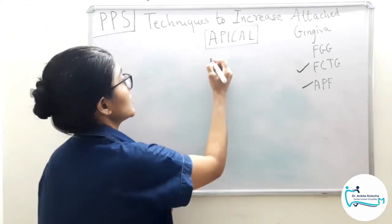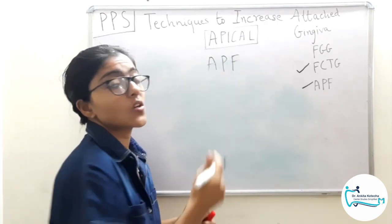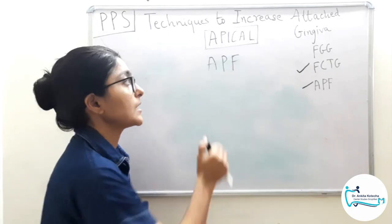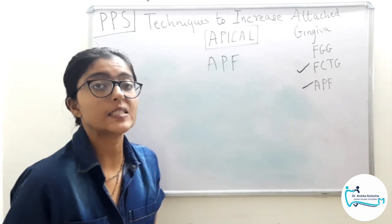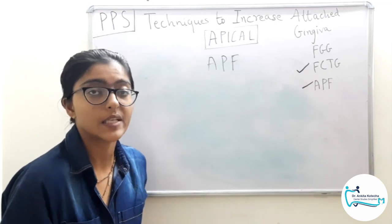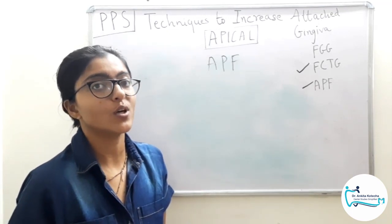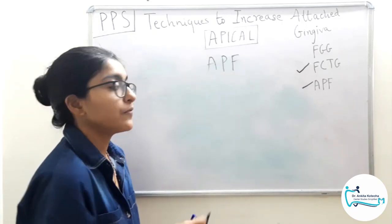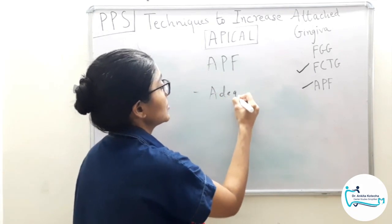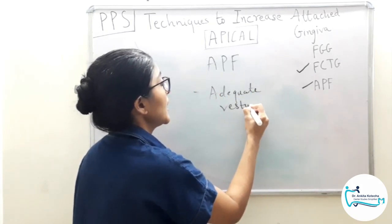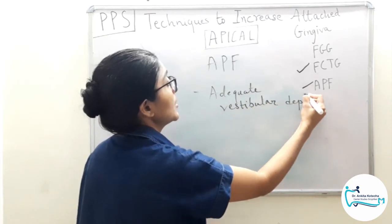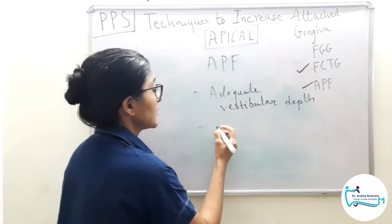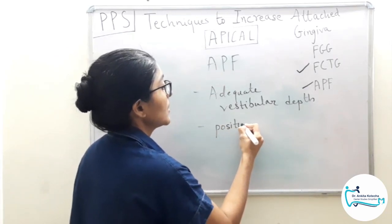Now we will discuss the apically positioned flap. This technique was already discussed under surgical techniques for pocket elimination or pocket reduction. While performing this flap technique, an added advantage is an increase in the width of attached gingiva. The first prerequisite to keep in mind is adequate vestibular depth — without this the technique cannot be performed. The second consideration is the position of the flap in relation to the crest of the bone.